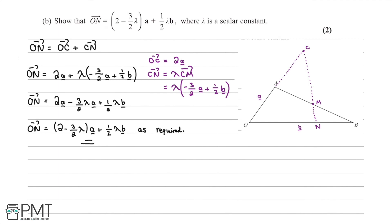This question is worth two marks. We receive our first mark for introducing lambda where we said CN was equal to lambda CM. We receive our second mark for coming to the correct conclusion that the vector ON is equal to (2 minus three over two lambda) a plus one half lambda b.